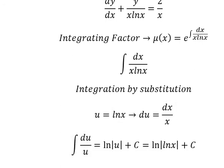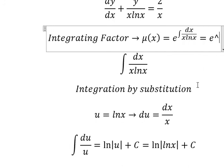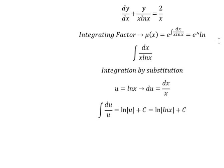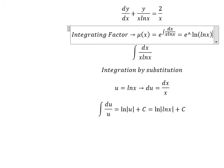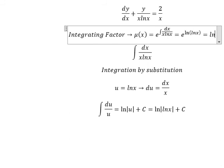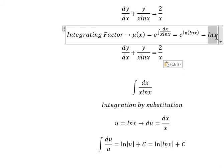Now we go back here. That means this equals e to the power of this one. In this situation, we don't need the absolute value anymore. We simplify and get lnx. That means we need to multiply both sides by this.